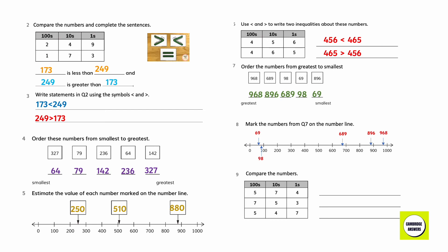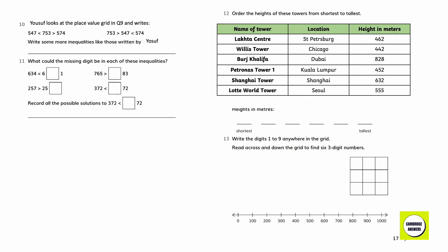Compare these numbers. Write some inequalities using the symbols. 753 is greater than 574. 574 is less than 753. 574 is greater than 547. Yusuf looks at the place value grid in question 9 and writes: 547 is less than 753 and 753 is greater than 574. 753 is greater than 547 and 547 is less than 574. Write some more inequalities like those written by Yusuf. 574 is greater than 547 and 547 is less than 753. 547 is less than 574 and 574 is less than 753.